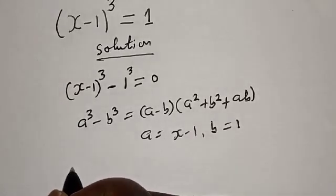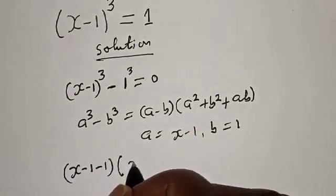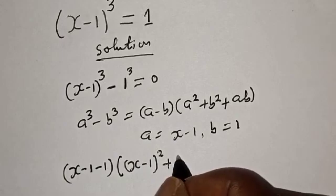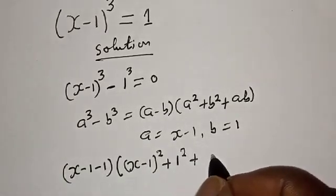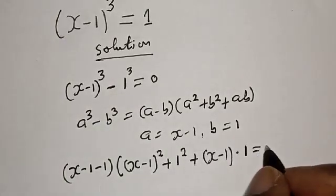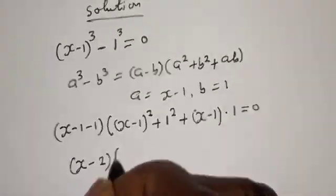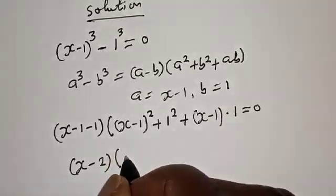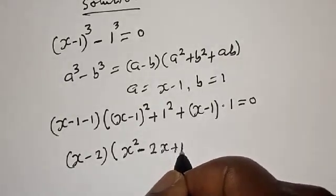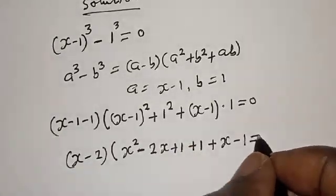In this case, a is equal to s minus 1 and b is equal to 1. Substituting, we have s minus 1, then minus 1, bracket s minus 1 squared plus s minus 1 multiplied by 1, equals 0. Now s minus 1 minus 1 gives s minus 2, bracket s minus 1 squared, which is s squared minus 2s plus 1, plus 1, plus s minus 1, equals 0.